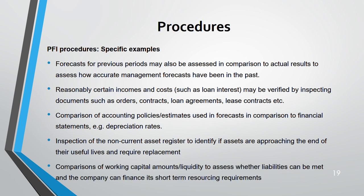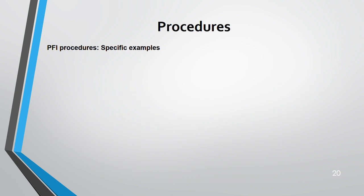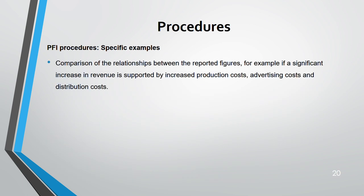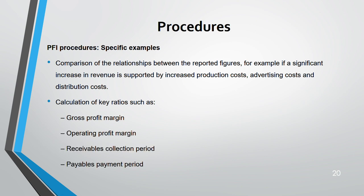Inspect the non-current asset register to identify the end of useful life and whether assets require replacement. Compare working capital amounts to see whether liabilities can be met. Consider relationships between reported figures — for example, a significant increase in forecast revenue should be accompanied by an increase in production cost, advertising cost, or distribution cost to support that revenue increase.